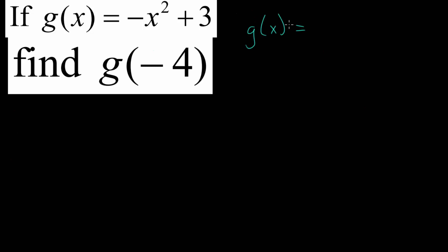We can start by just rewriting this function here, that g of x is minus x squared plus 3.